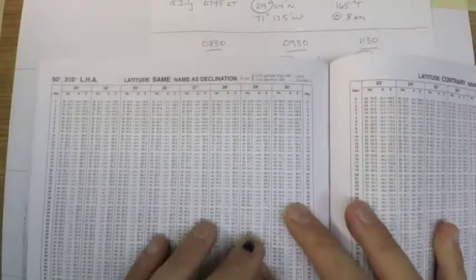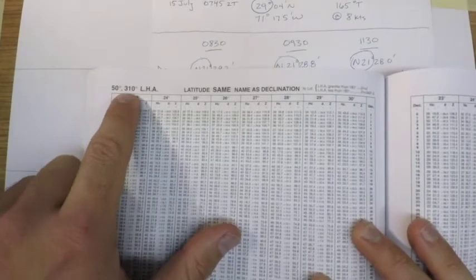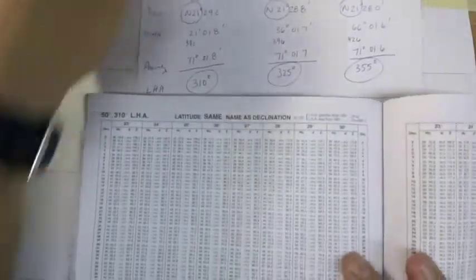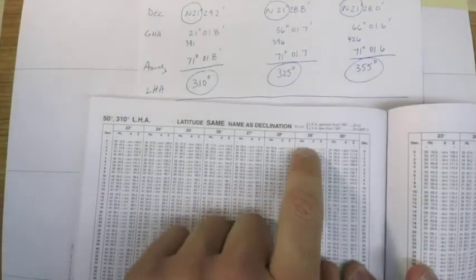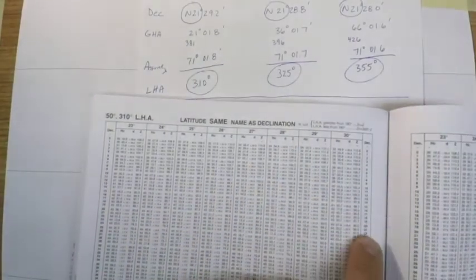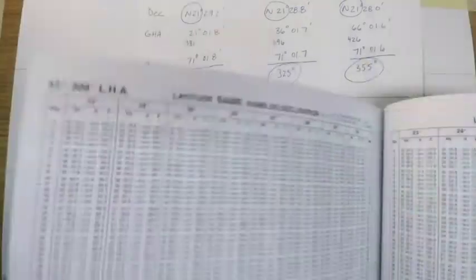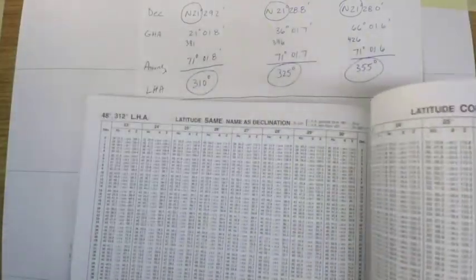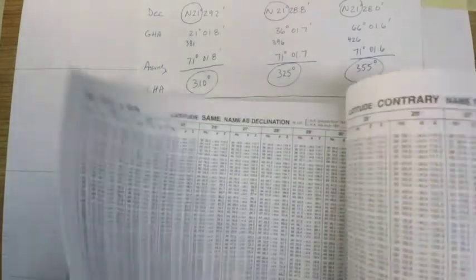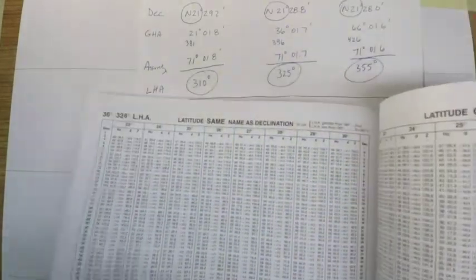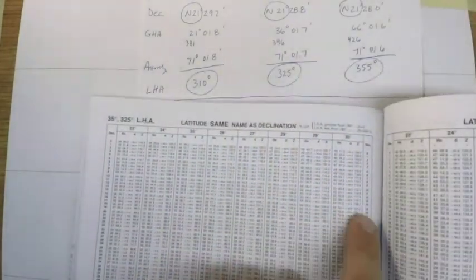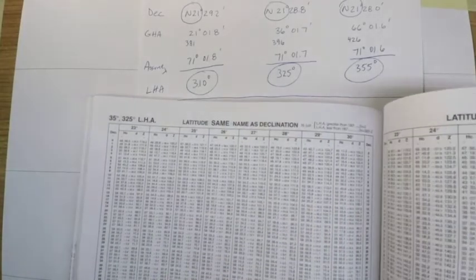So once I open up the sight reduction tables HO 229, I'll go searching for this information. So here's my first one: my LHA is 310, my latitude is 29, and my declination is 21, so I'll pull that data out. And then I'll do the same thing for LHAs of 325, 29, 21, I'll pull that data out.